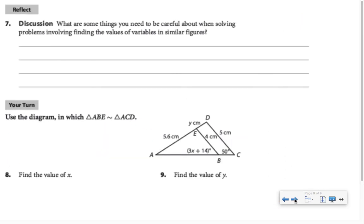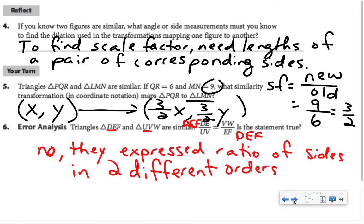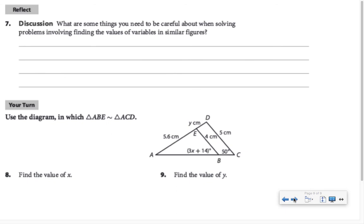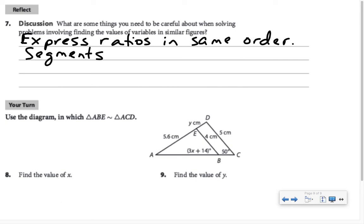What are some things you need to be careful about when solving problems involving finding the values of variables in similar figures? First of all, I would say this error analysis that we talked about in number 6. Be consistent. Make sure that you're expressing your ratios in the same order. Also, remember, segments are proportional, but angles are congruent.